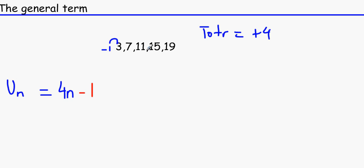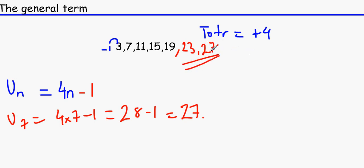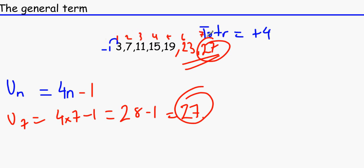To find out what the seventh term is for the second sequence, we write U7 equals 4 times 7 minus 1. That's 28 minus 1, which equals 27. If we continue the sequence: 3, 7, 11, 15, 19, 23, 27. 19 plus 4 is 23, 23 plus 4 is 27. And as you can see, that's the first, second, third, fourth, fifth, sixth, seventh term — and that is 27.